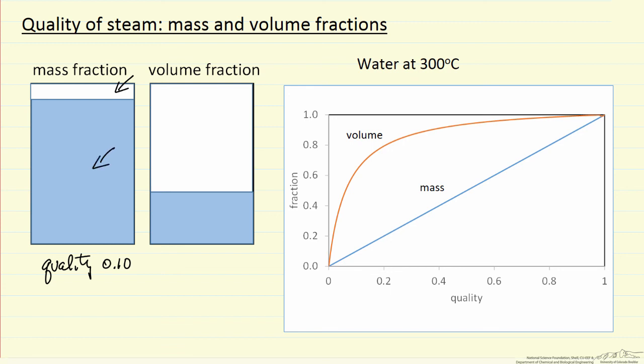Because the vapor occupies a much larger volume for the same mass, the volume fraction is about 63% vapor for water at 300 degrees C.